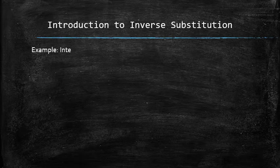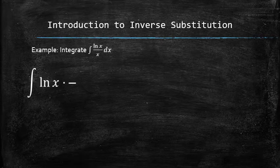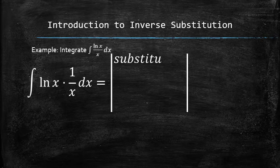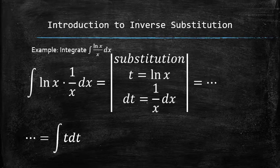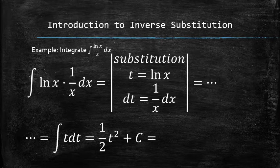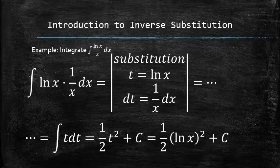Let's review the following example of a direct substitution. We first recognize the pattern and rearrange the integrand, then set up the substitution by setting a new variable, let's say t, equal to the natural logarithm of x and finding the differential of t. Next, we plug everything into the original integral and now we have nothing but a function of t left in the integrand. We finish the process by finding the antiderivative and plugging the natural logarithm of x back for t.